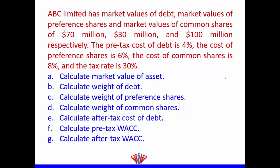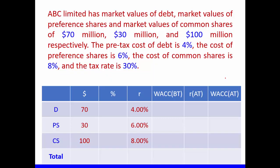Let's get a numerical example. APC Limited has a market value of debt, market value of preference shares, and market value of common shares of 70 million dollars, 30 million dollars, and 100 million dollars respectively. The pre-tax cost of debt is 4%, the cost of preference shares is 6%, the cost of common shares is 8%, and the tax rate is 30%. Calculate: the market value of asset, weight of debt, weight of preference shares, weight of common shares, after-tax cost of debt, pre-tax WACC, and after-tax WACC.